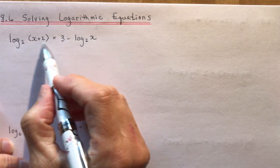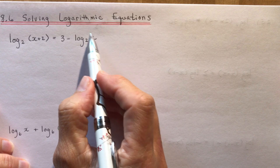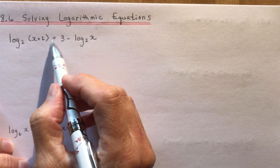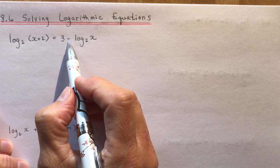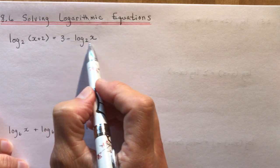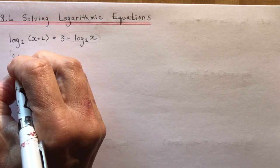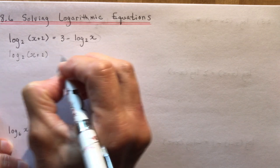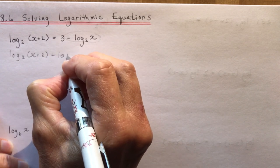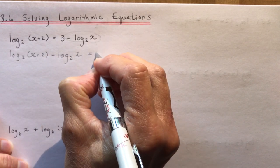The first thing you want to do when you look at one of these equations is to get the logs to one side and keep the constant on the other. In this case I need to move this negative log 2x, so I'm going to add log base 2x and set that equal to 3.